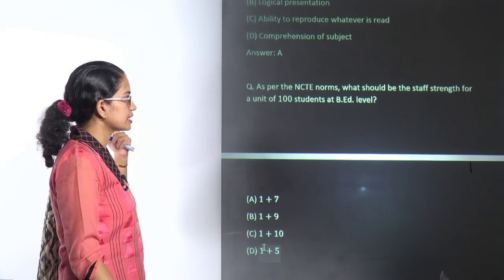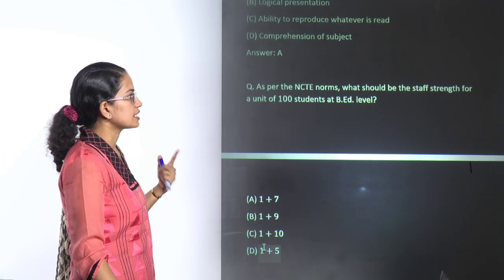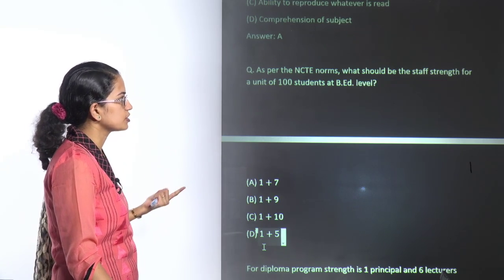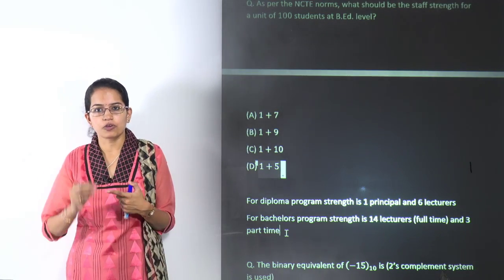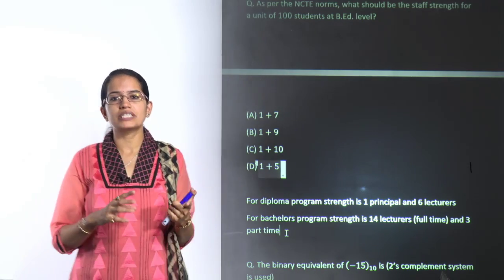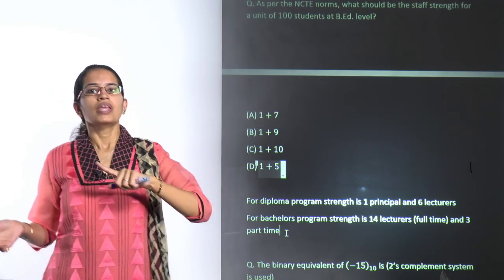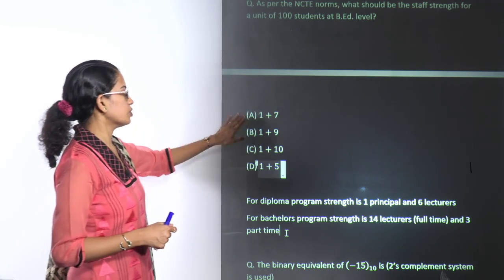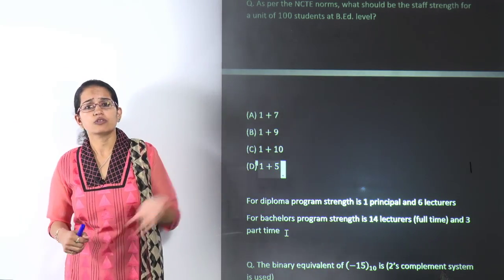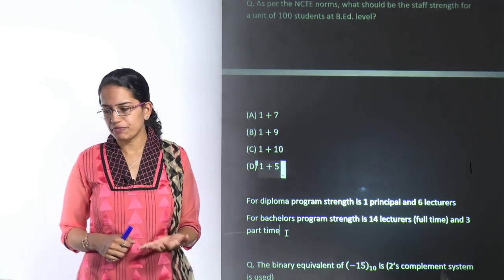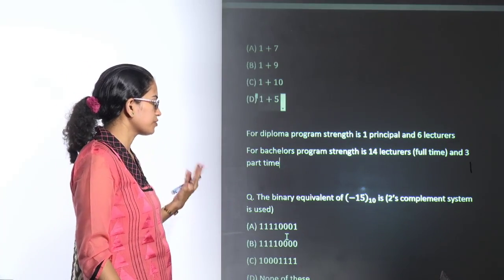The next question was regarding the NCTE norms: the staff strength of a unit of 100 students at the B-Ed level. For diploma, the NCTE documentation says one principal plus six lecturers. For B-Ed, you have 14 full-time lecturers and three part-time lecturers. An important question for the future as well.